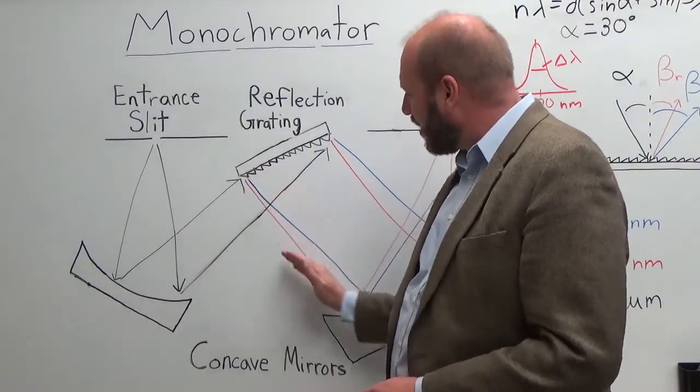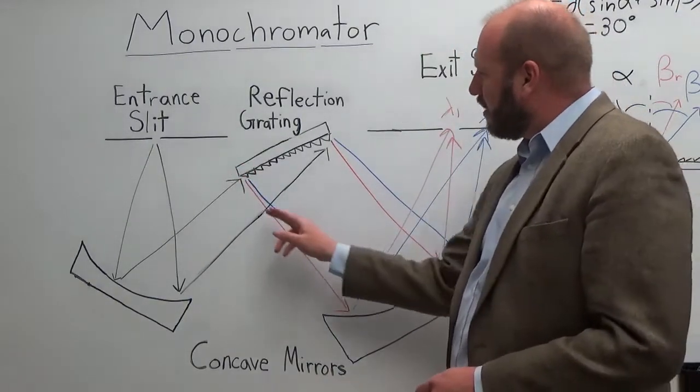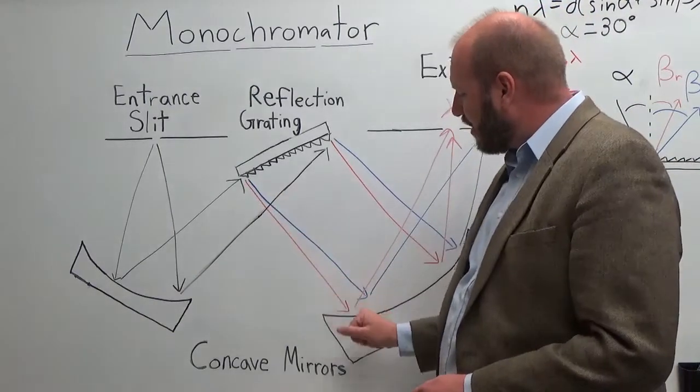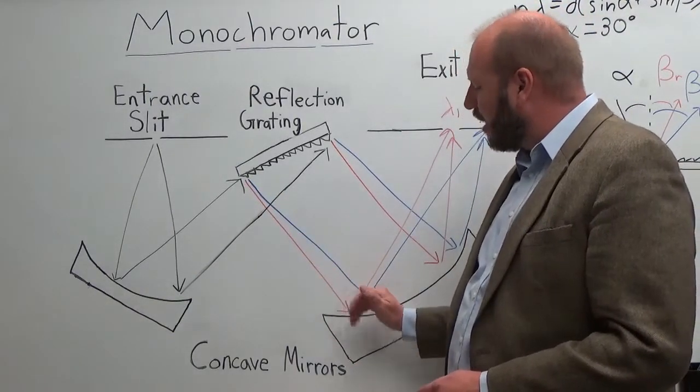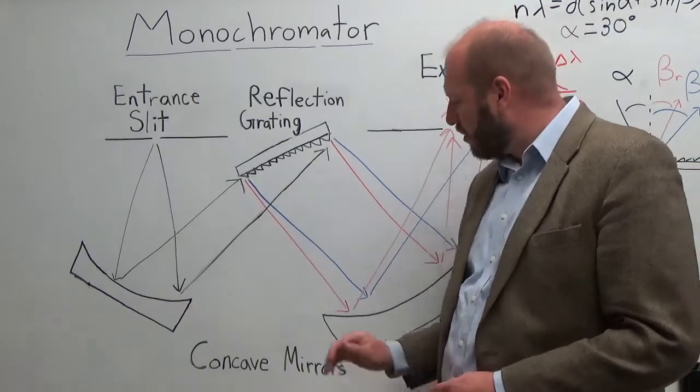This diffraction grating will then separate light into many colors. Here we have our red light coming off at a certain angle and the blue light will be separated at a different angle, a greater angle.